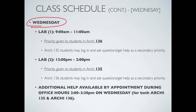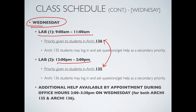On Wednesday it's the same lab setup — Lab 1 at 9 a.m. to 11 a.m. and Lab 2 from 12 noon to 2 p.m. — but who gets priority has been flip-flopped. Architecture 136 gets priority in the morning session from 9 to 11, but 135 students can log in and ask questions when they don't have questions. Architecture 135 has priority in the afternoon slot from 12 noon to 2 p.m. The idea is to spread it around so everyone, depending on their schedule, can access help.